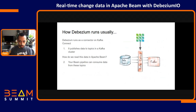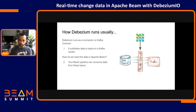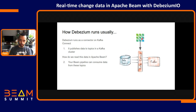Usually the way Debezium runs is as a Kafka connector. You'll have your Kafka Connect deployment and you'll deploy a Debezium source connector there — for example, a MySQL source connector. It'll connect to MySQL, track the binlog, the log of changes of the database, and publish those changes to different Kafka topics, one per table. Classically, if you wanted to analyze this data with Beam, you would connect to your Kafka cluster and consume it with Kafka IO.